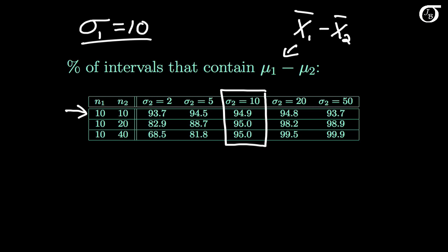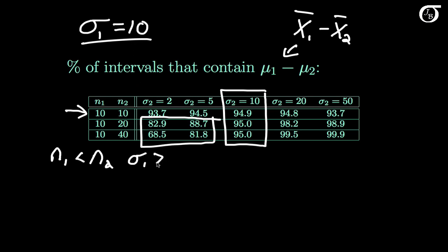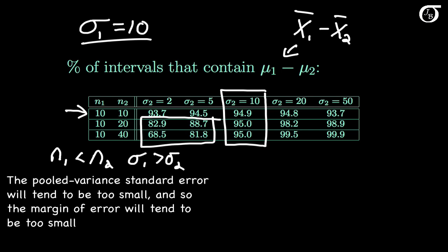But what happens when the sample sizes are different as well? In the bottom left corner, we have the situation where n1 is less than n2, and sigma1 of 10 is greater than sigma2. In these situations, the estimated coverage percentages are much less than the stated level of 95%. The pooled variance method isn't working well here. The reason is that the pooled variance standard error tends to be too small, so the margin of error is too small, the interval itself is too narrow, and the true coverage probability is less than the stated 95%.